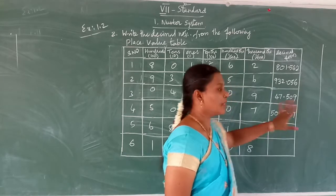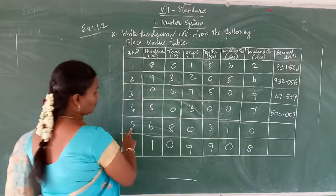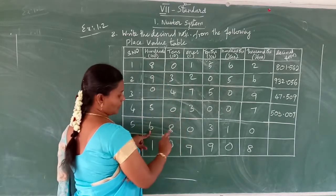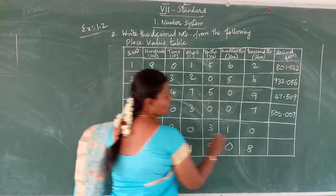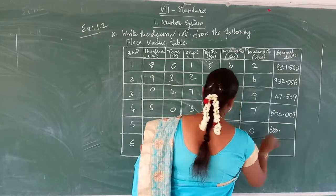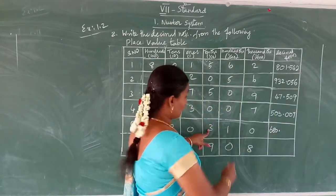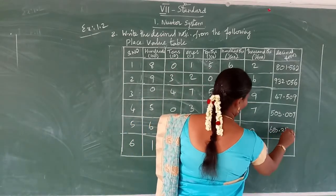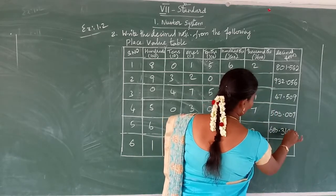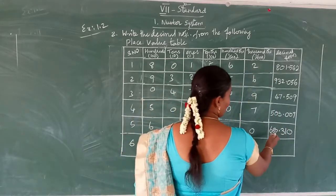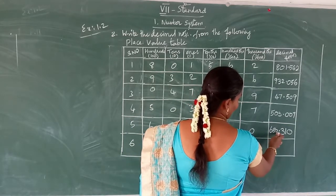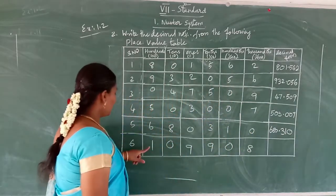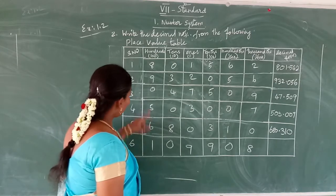See the fifth one. The hundreds place is the whole part — hundreds is six, so 600. Then in the decimal part: tenths is three, hundredths is one, thousandths is zero. So six hundred and eighty point three one zero — 680.310.